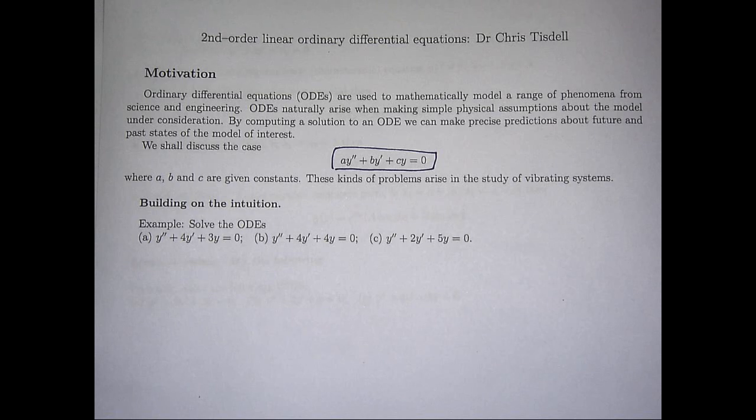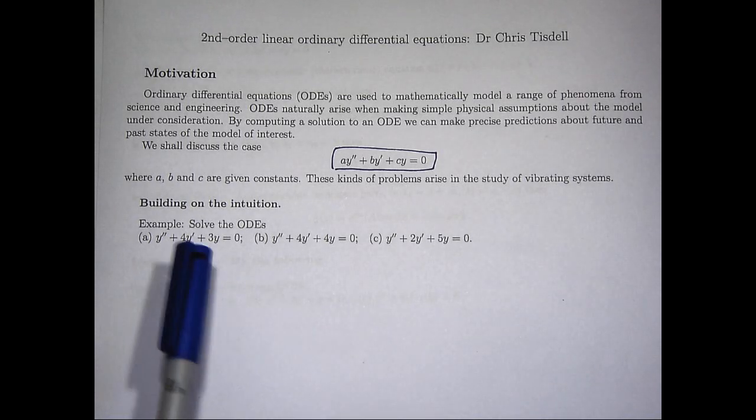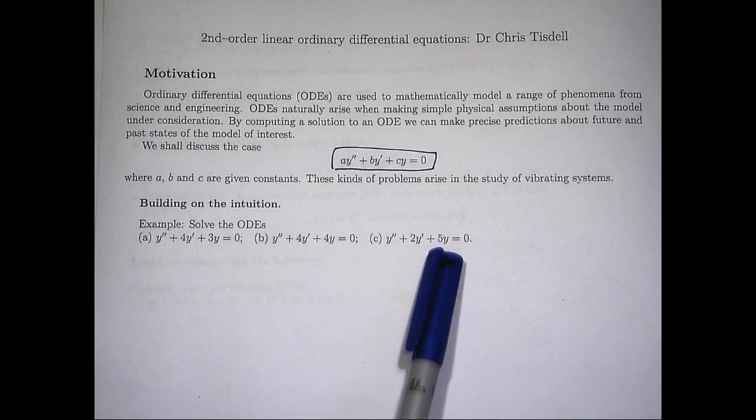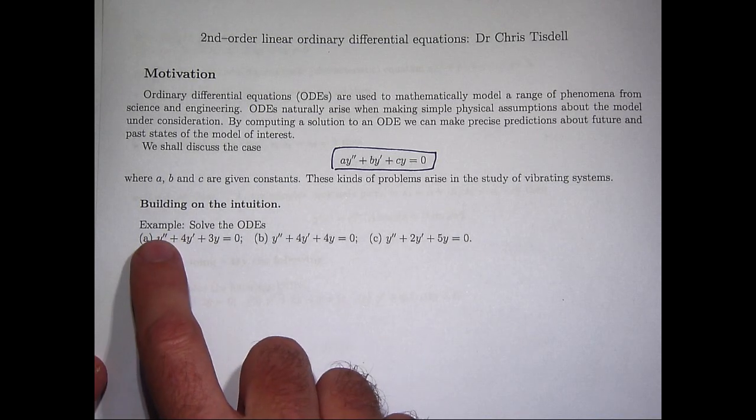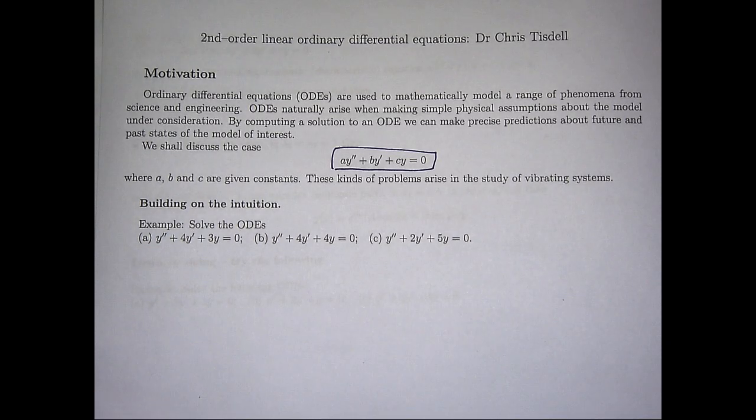So let's have a look at the solution methods to these three problems, and at the end we'll talk about some modelling relationships. As a sort of basic taster for that, think of a spring mass system. You've got a mass attached to a spring, and there's some damping involved. The damping might be due to oil or air resistance or something like this.